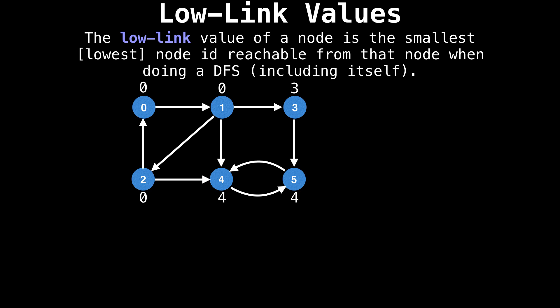From this view, you realize that all nodes which have the same low link value belong to the same strongly connected component. If I now assign colors to each strongly connected component, we can clearly see that for each component, all the low link values are the same. This seems too easy, right? Well, you're not wrong. There is a catch.